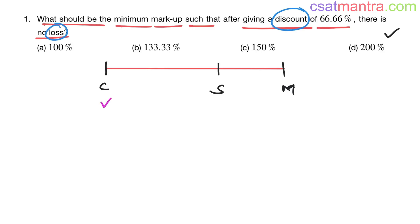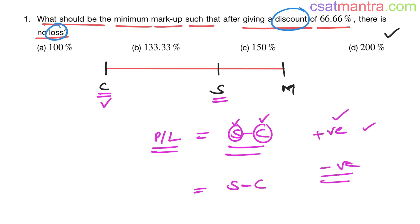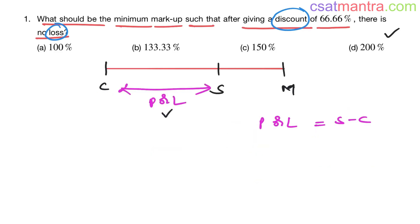You bought a product at cost price c, and you are selling at selling price s. Profit or loss is s minus c. If s minus c is positive, that means you made a profit — selling price is greater than cost price. If s minus c is negative, that means you made a loss — selling price is less than cost price. The formula for profit or loss is the same: selling price minus cost price.